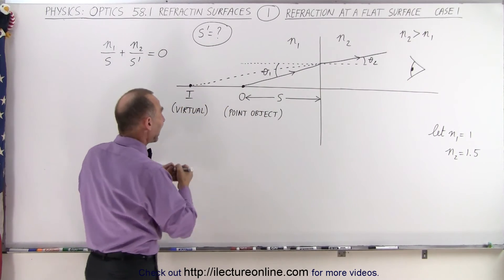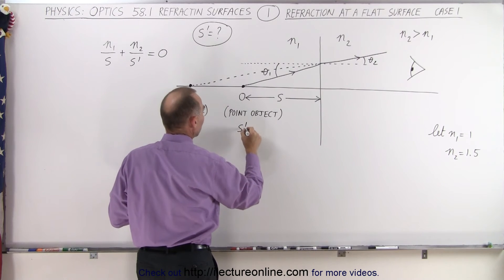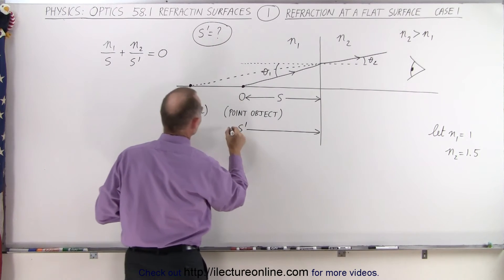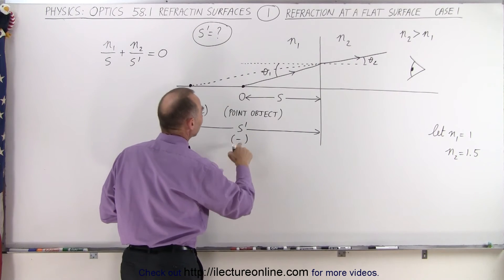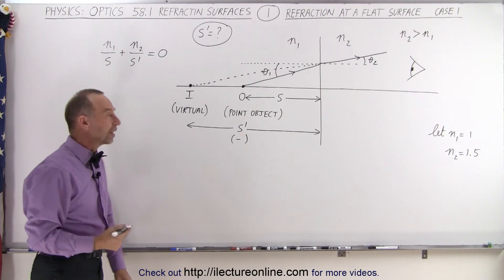Now that would mean that we probably have a negative s prime distance. S prime, which is this distance right here from the boundary toward the image, we expect that to be negative because we have a virtual image.